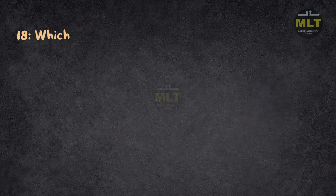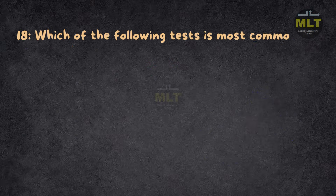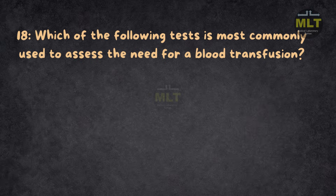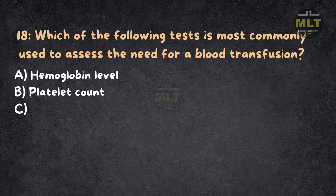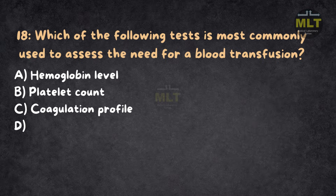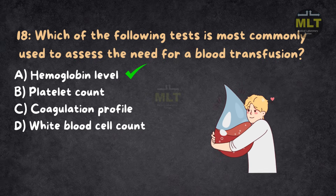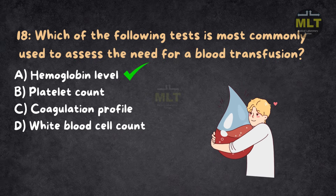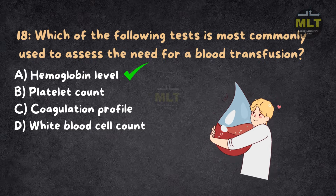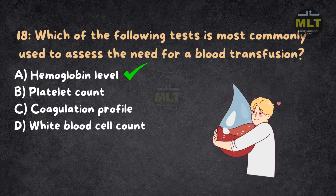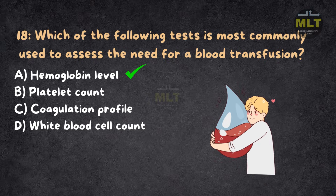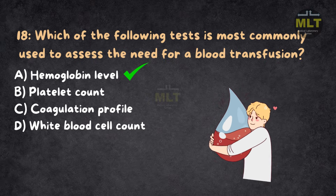Question 18: Which of the following tests is most commonly used to assess the need for a blood transfusion? Option A: Hemoglobin level. Option B: Platelet count. Option C: Coagulation profile. Option D: White blood cell count. Correct answer: A, hemoglobin level. Hemoglobin levels are a key indicator of whether a patient requires a blood transfusion, especially in cases of anemia or blood loss. Platelet count is important for bleeding disorders, not transfusion decisions.